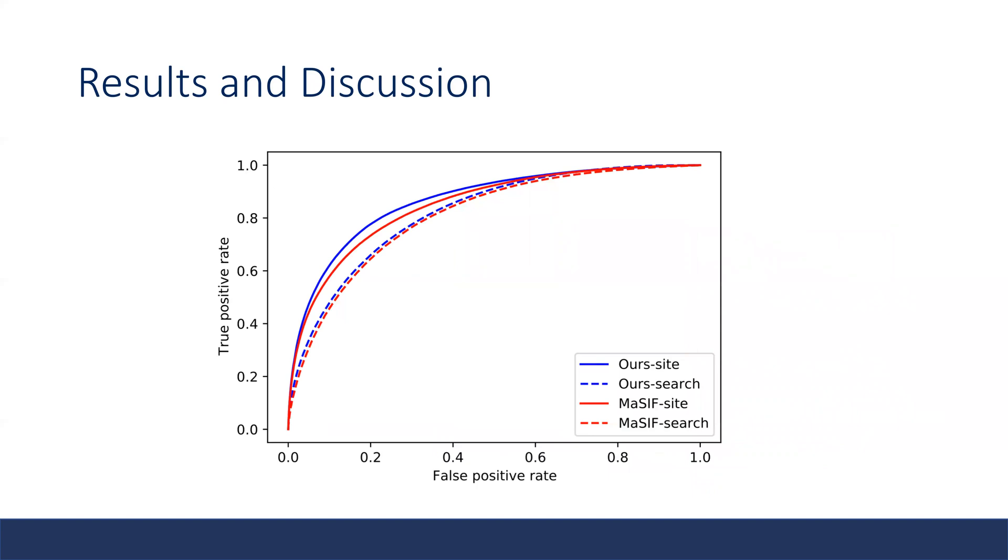Here is the result of the experiment on both problems. The solid curve shows the results of the site identification. As we can see, this work obviously outperforms the prior work. But for the other experiment, which is the interaction prediction shown in the dash curve, this work is very close to the prior work. However, it's not a problem since this work is mainly focused on reducing the computation time.